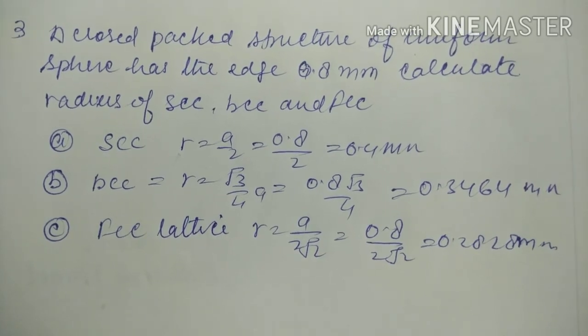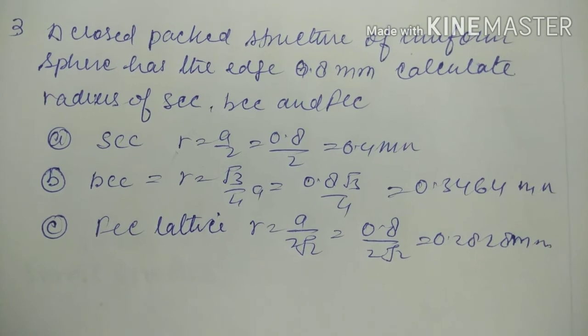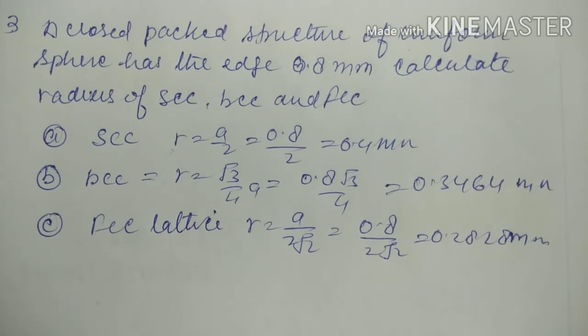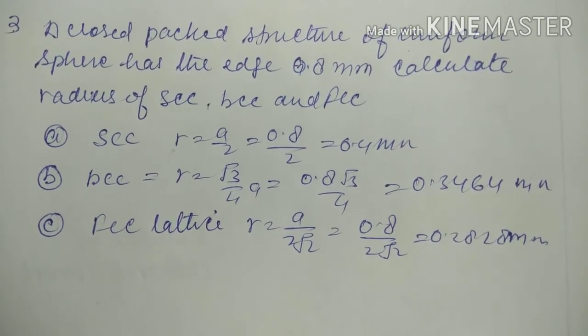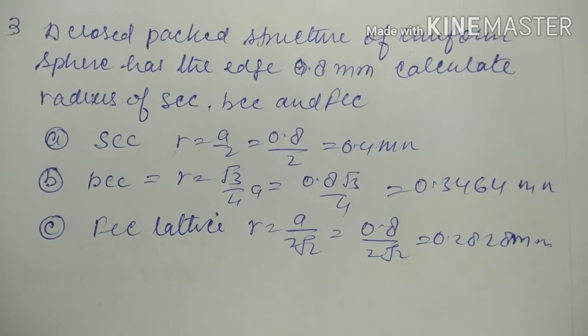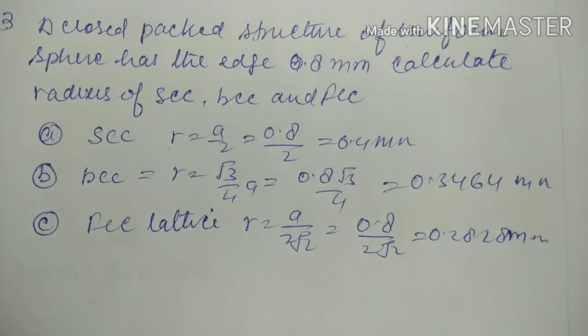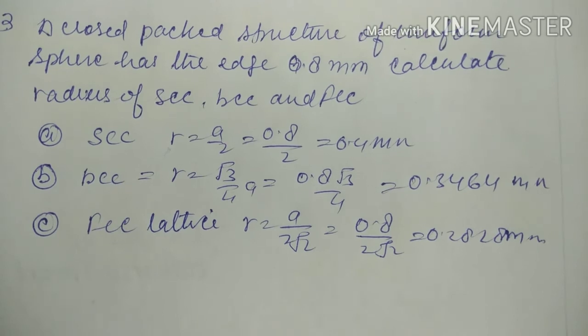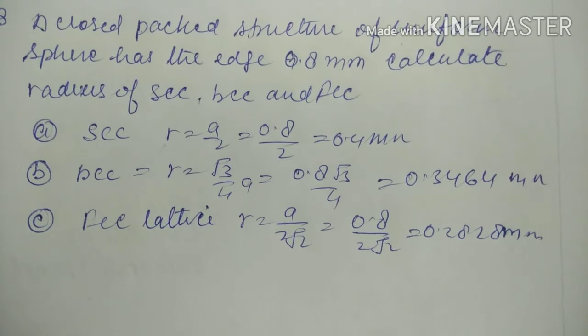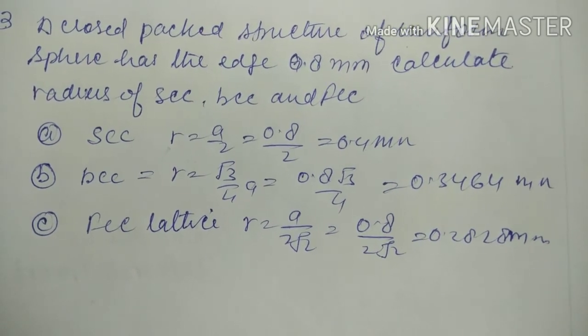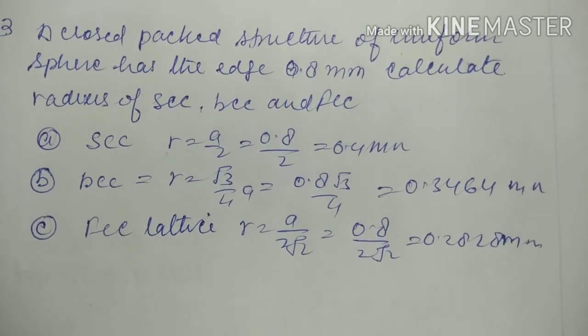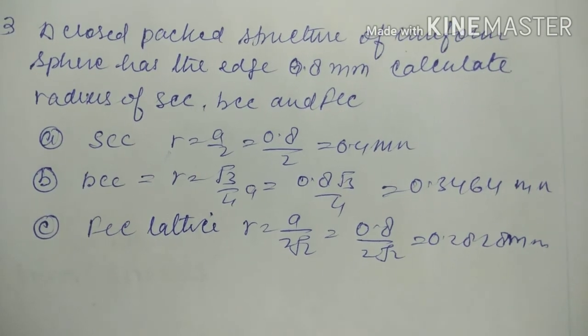Next question: crystal close packing structure of uniform spheres has edge length 0.8 mm. Calculate the radius for SCC, BCC, and FCC. For SCC, we know r equals a/2, meaning 0.8 divided by 2 equals 0.4 mm. For BCC, we know r equals root 3 by 4 times a. Putting the value gives 0.346 mm. For FCC, r equals a divided by 2 root 2, giving 0.28 mm.